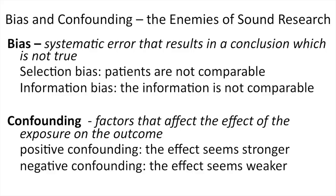What is bias and confounding? We'll talk a lot about these — they are the enemies of sound research. Bias is a systematic error that results in a conclusion which is not true. Selection bias means patients are not comparable between groups, or not comparable with the source population. Information bias means the information recorded is not comparable — for example, if in treatment group A a patient has an event and in group B the same event occurs but is classified differently.